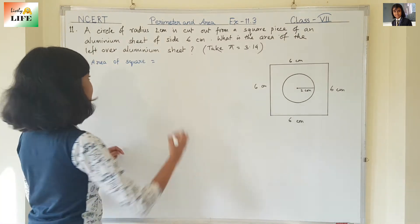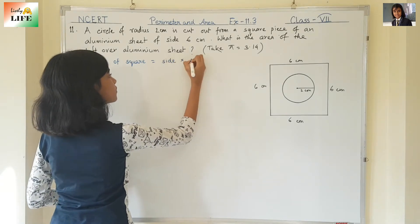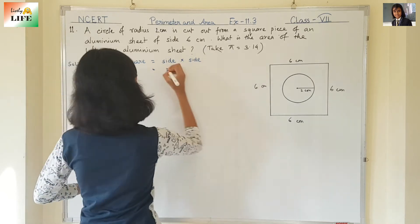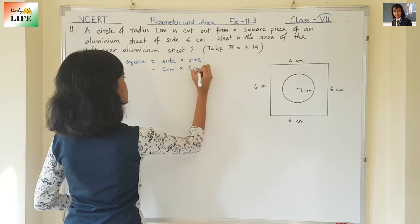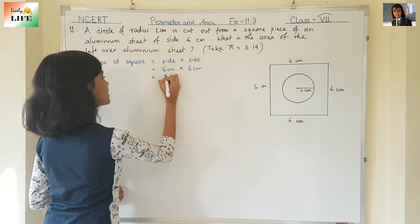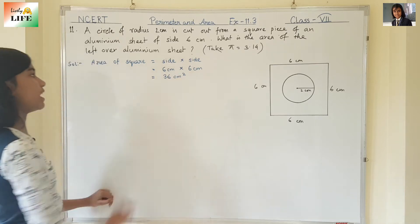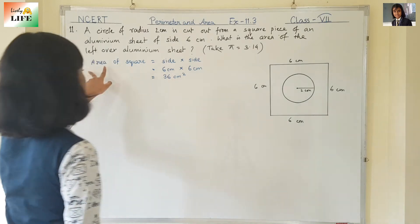Formula of area of the square is side into side. Side is 6 cm. 6 cm into 6 cm equals 36 cm square. So answer is 36 cm square, area of the square.